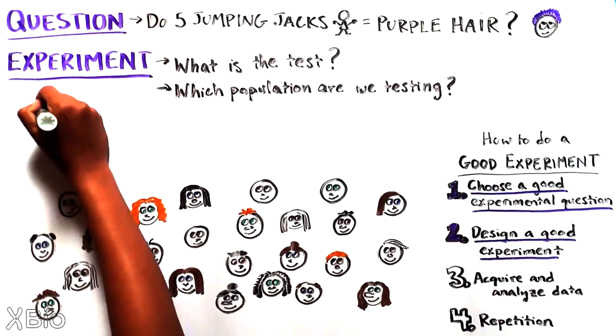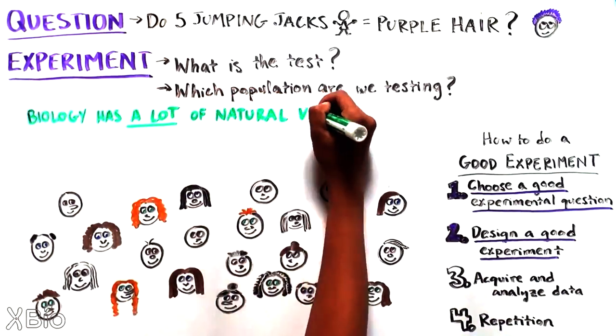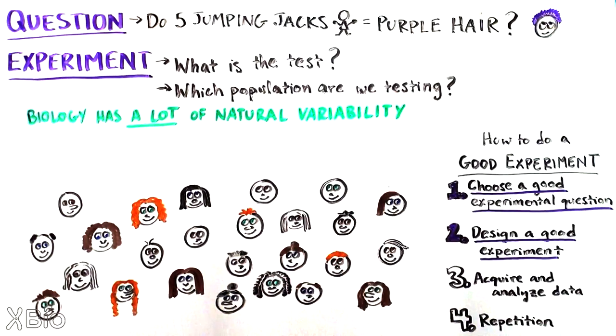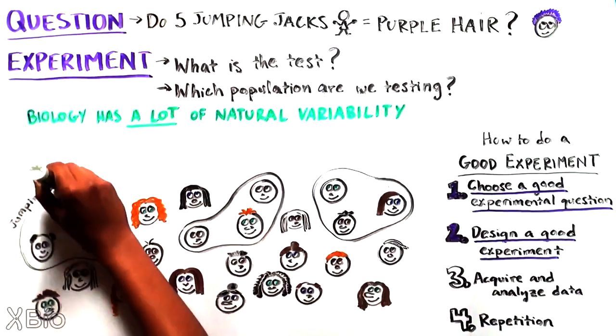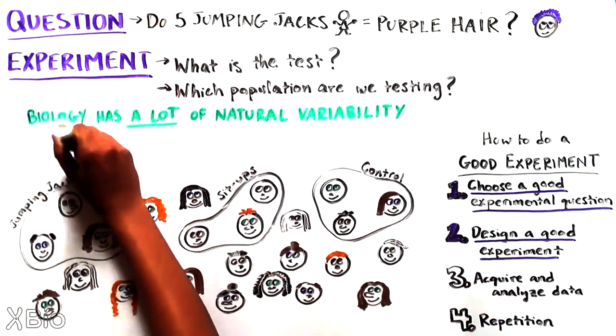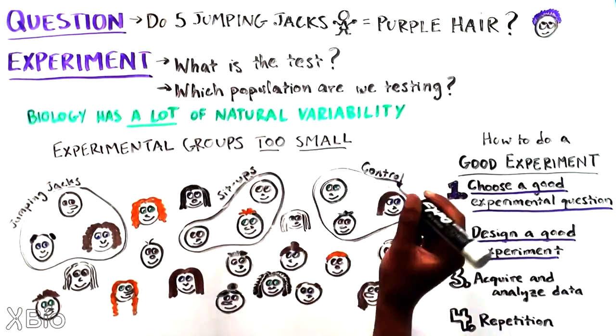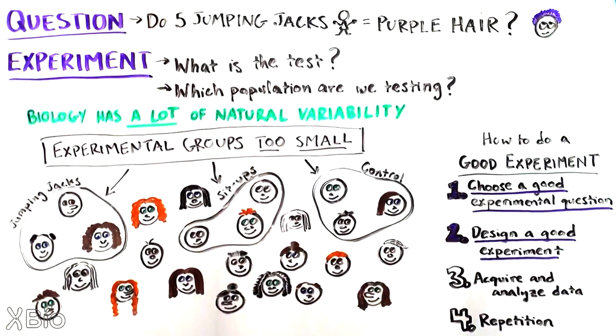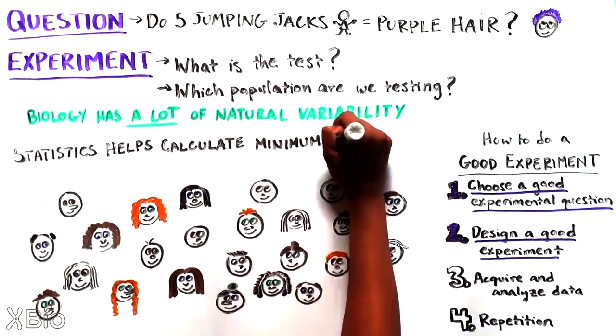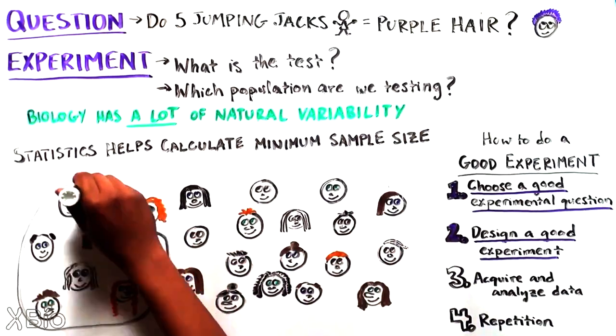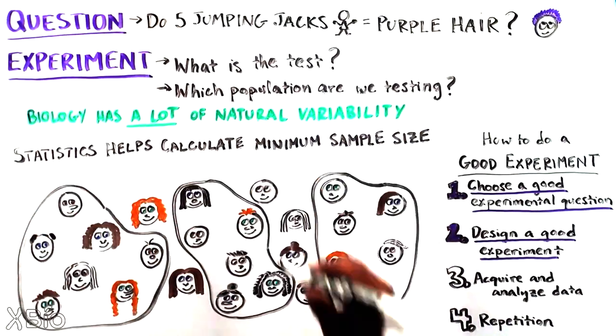One problem is that in biology, there's a lot of natural variability. If the experiment is not large enough, for example, three people in each group, there is a high likelihood that the wrong conclusions will be drawn because our experimental groups may not properly represent the whole population. Statistics can help by giving us tools to calculate the minimum size that our sample should be. This can often be hundreds of people.